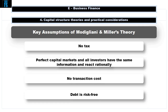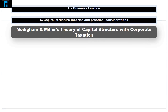Given these assumptions, there were many criticisms — particularly that the theory assumed no tax. When looking at capital structure, tax is very important. Why? Because the interest payable on debt is tax deductible, and this impacts on the cost of debt. So the model was revised to include tax.